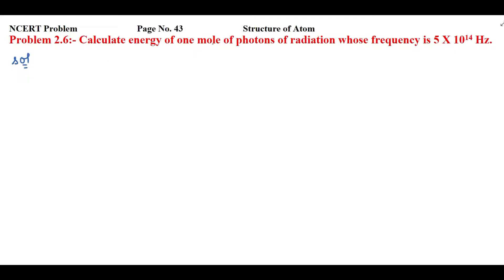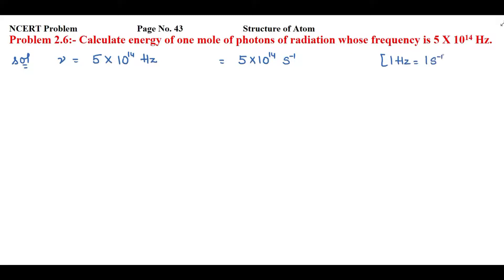To apply the unitary method, first we'll find the energy of one photon. The given value is frequency, denoted by ν, equal to 5 × 10¹⁴ Hz. Converting Hz to seconds: 1 Hz is equal to 1 second inverse, so the frequency is 5 × 10¹⁴ s⁻¹.